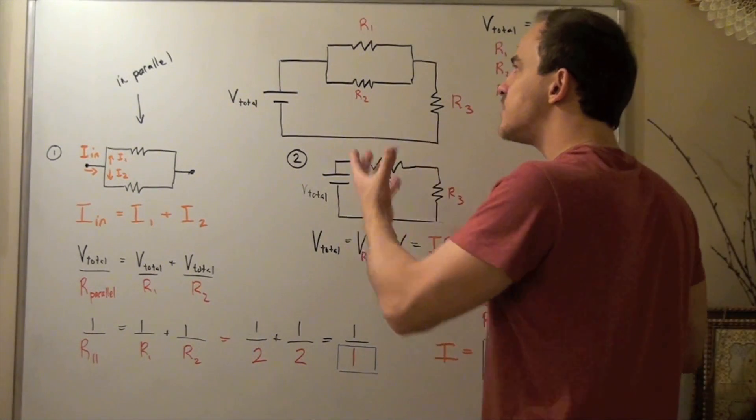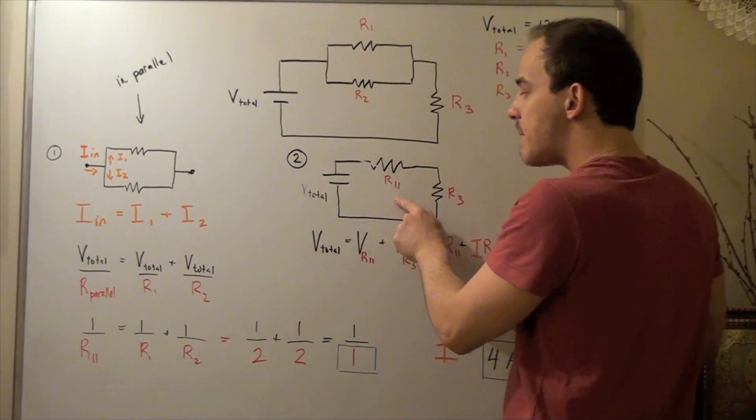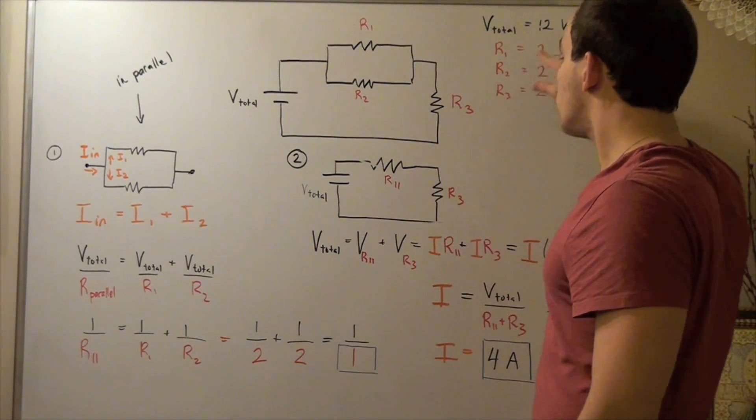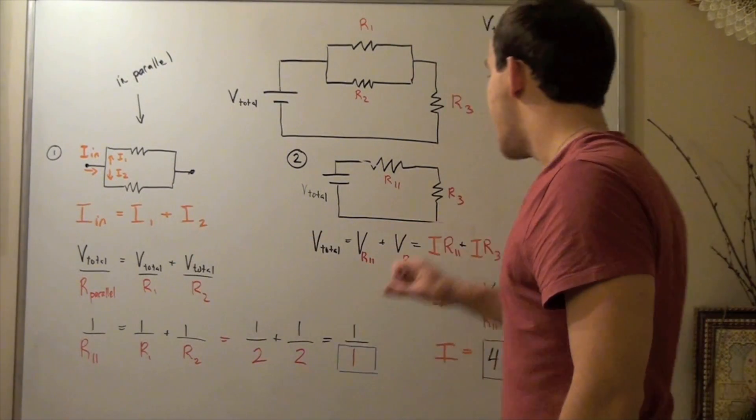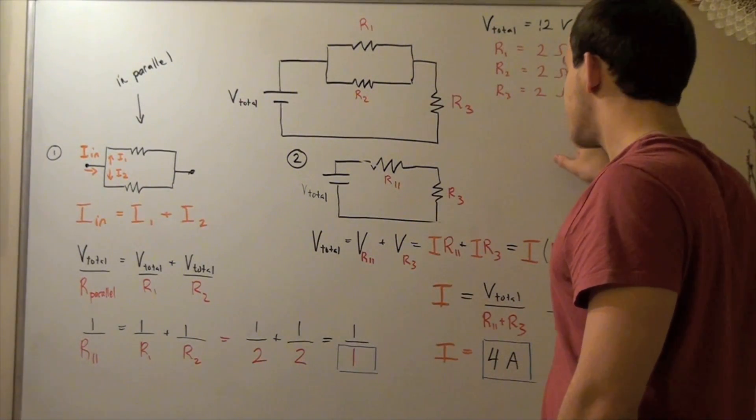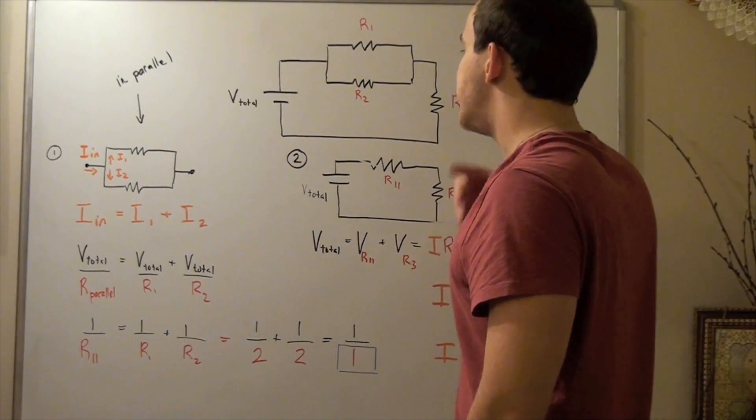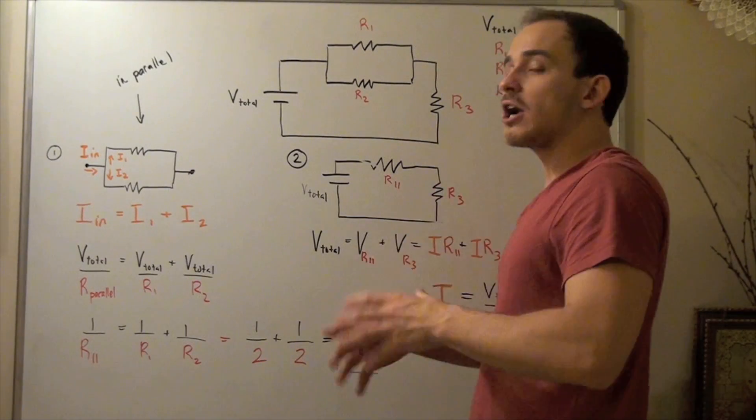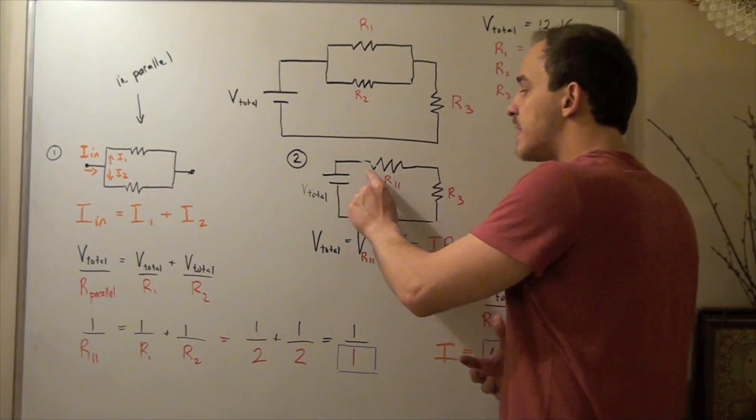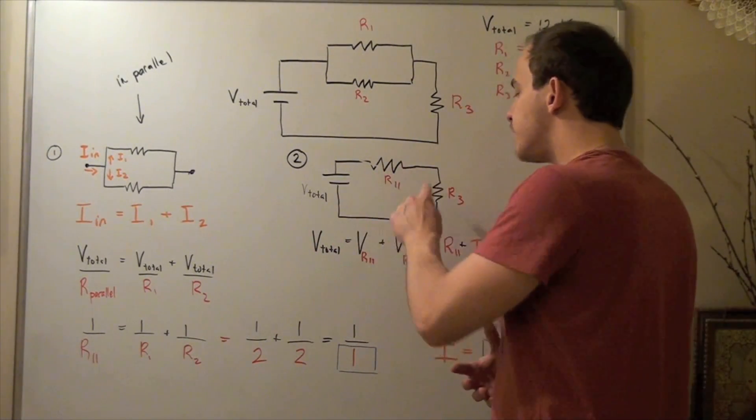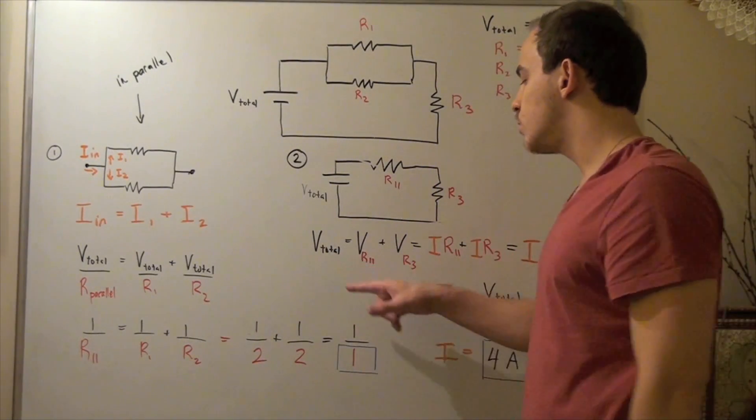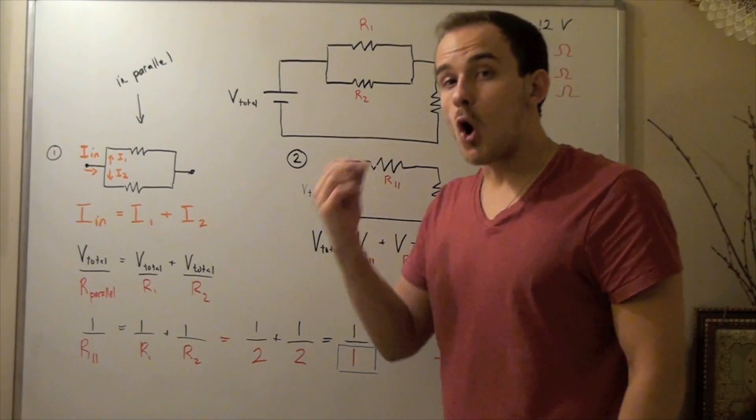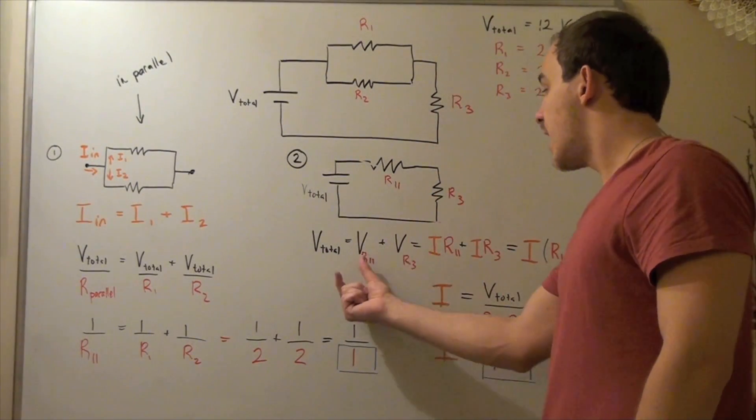Our 12 volt battery, our combination resistor, and resistor 3. This is no longer 2, this is 1 from part 1, and R3 is still our 2 ohm resistor. Recall that whenever we have two resistors in series, our total voltage equals V across this guy plus V across this guy. Now let's use Ohm's law to rewrite both of these.